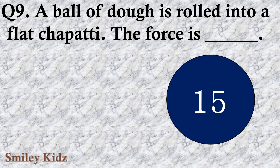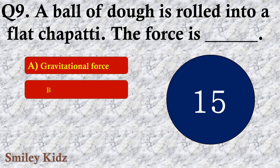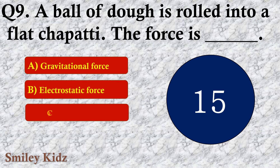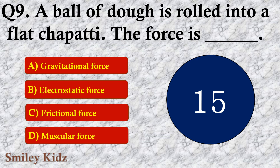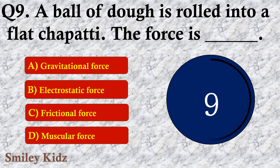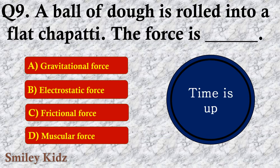Question number nine: A ball of dough is rolled into a flat chapati. The force is dash. The options are A. Gravitational force, B. Electrostatic force, C. Frictional force, or D. Muscular force. The right answer is option D — Muscular force. A ball of dough is rolled into a flat chapati using muscular force.